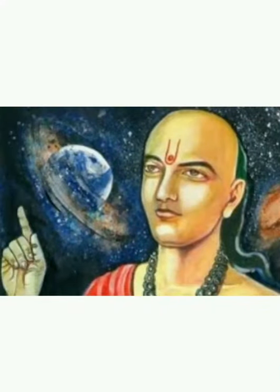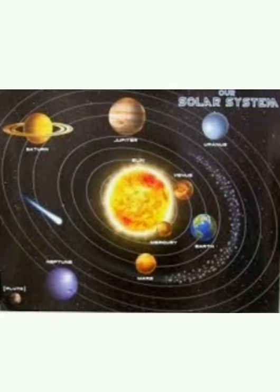He is Aryabhatta, the first Indian astronomer and mathematician, who proposed that the Earth and other planets revolved around the sun — the solar system. We already learned that the sun is at the center and planets are orbiting around the sun.